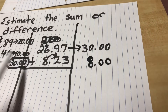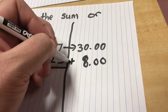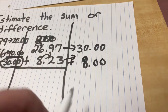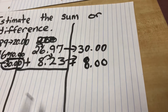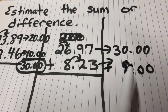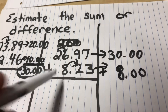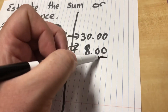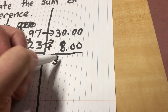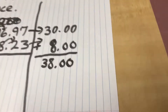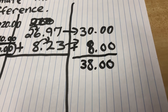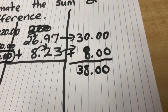Then I add the two estimated numbers. You need to draw arrows to show the new numbers — the original problem is given and you rewrite it with arrows and new numbers. So I have 30 plus 8, which gives me 38. Thirty-eight and zero hundredths — that is my final answer.